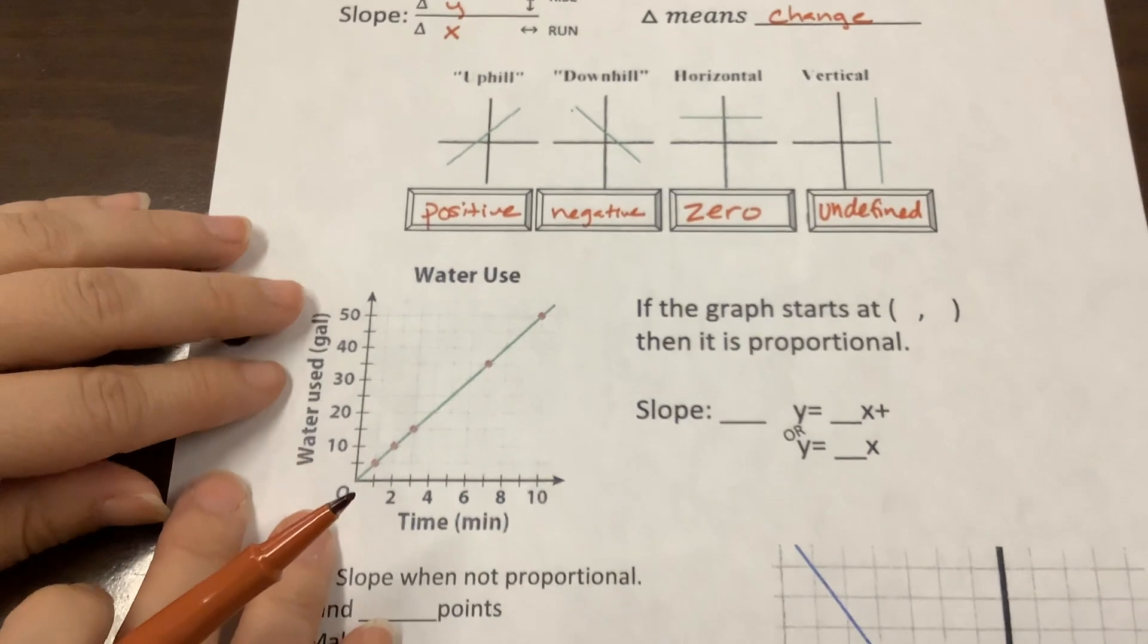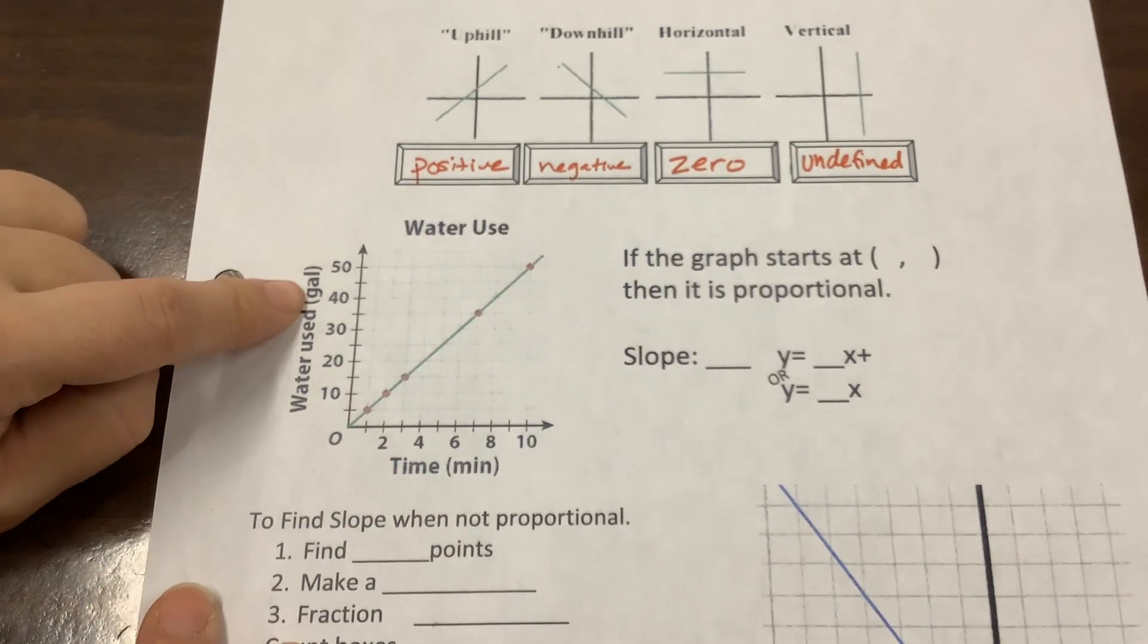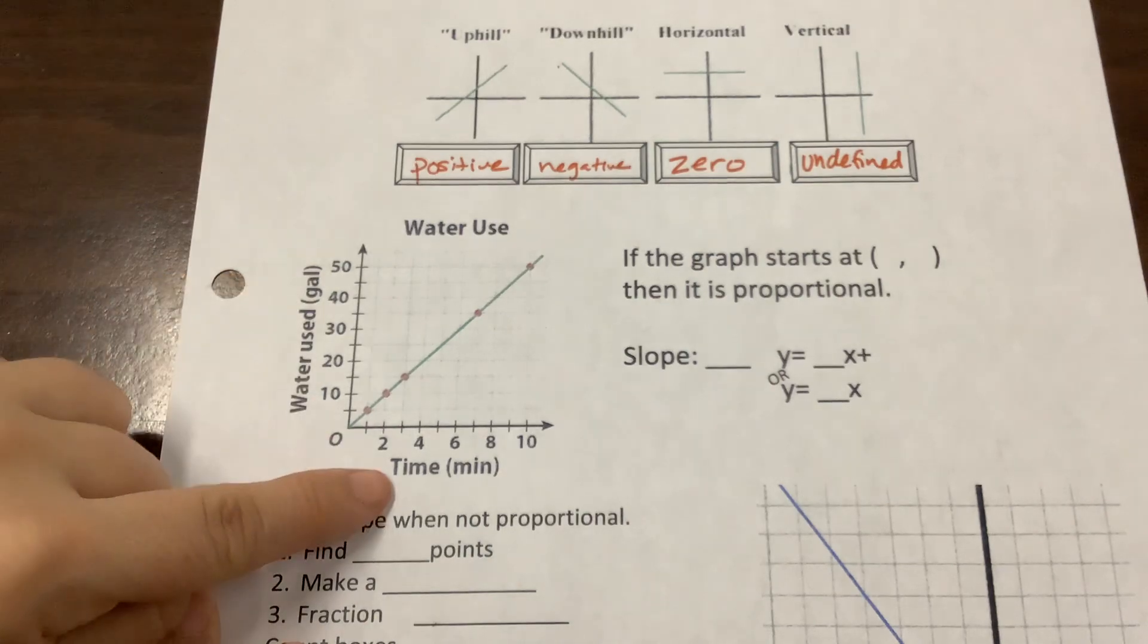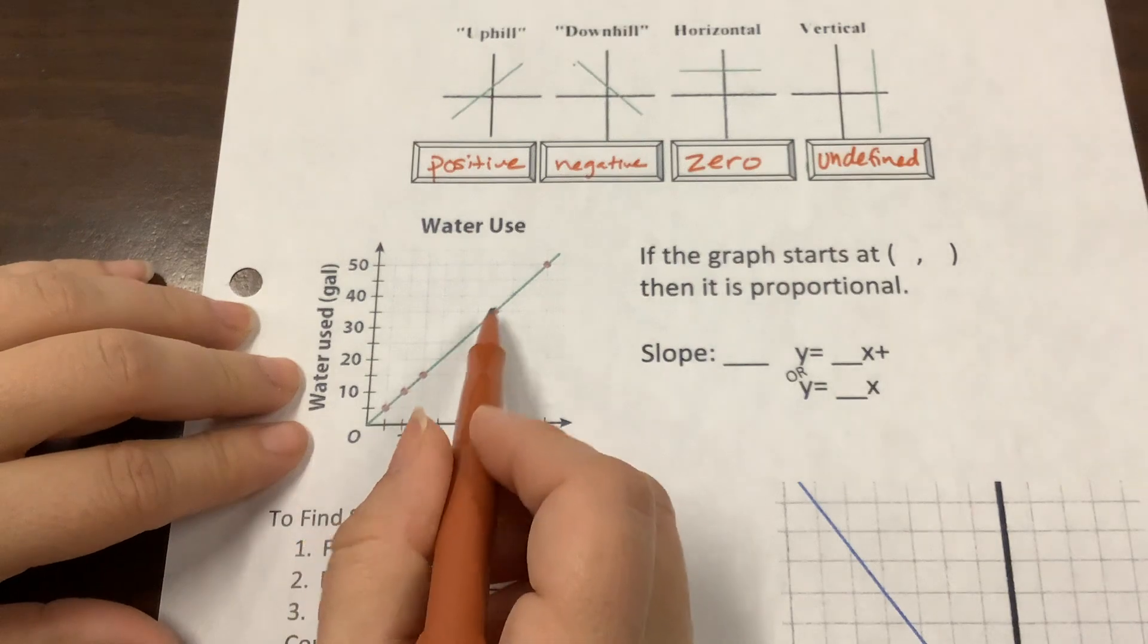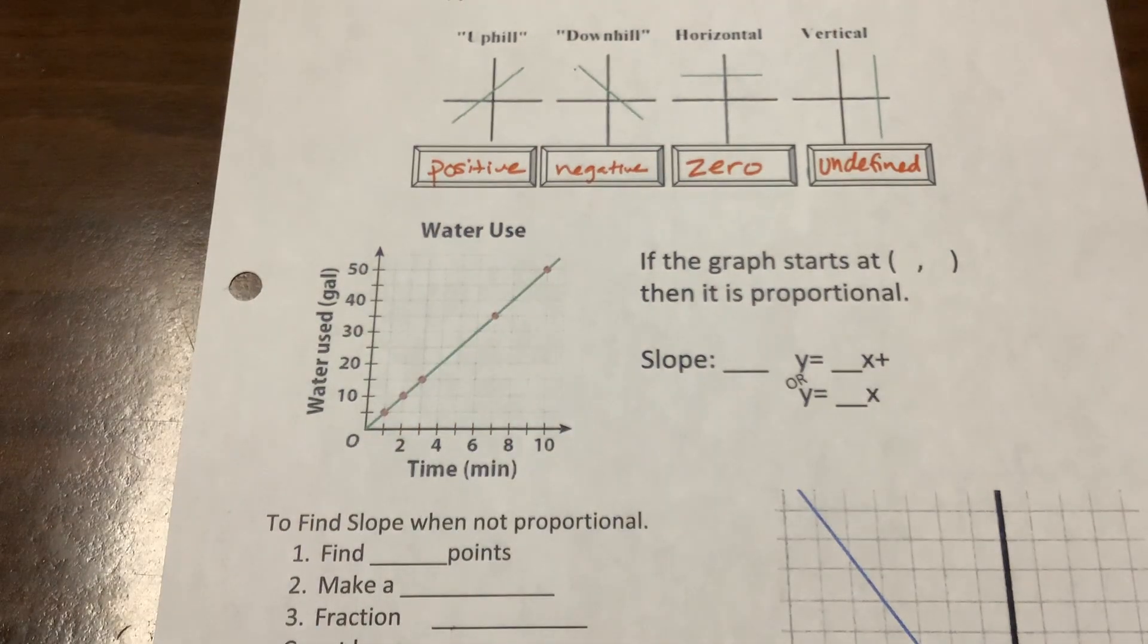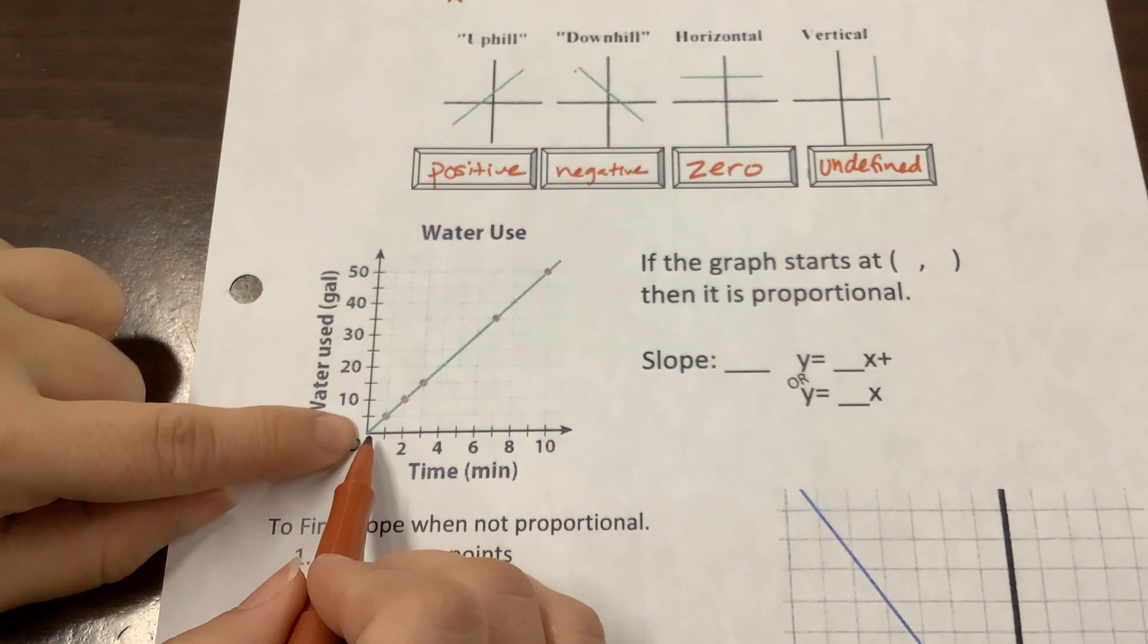Okay, so now looking at our graphs. So we have water used in gallons, and we're counting the time in minutes. And you see, they've given us a few different points scattered on the line here. Notice that this line does go through the origin, 0, 0.